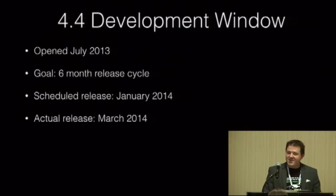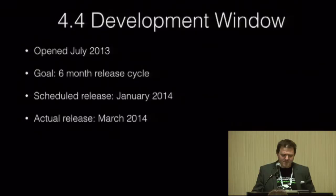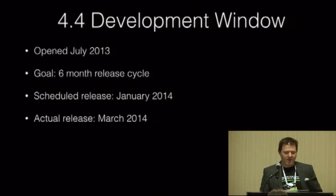The 4.4 development window opened in July 2013. Our goal was a six-month release cycle, shorter than the previous nine months and even shorter than the 18-month cycle before that. Our scheduled release was January; we actually released in the beginning of March — about seven months of development time, counting Christmas.